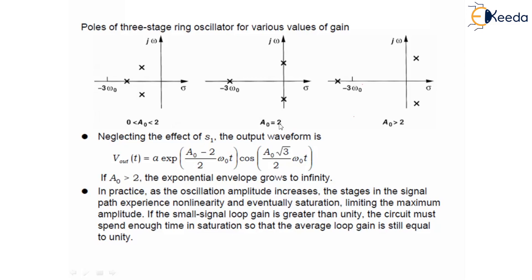For a circuit to oscillate, the open-loop gain per stage must be greater than or equal to 2, as shown by the pole diagram. This is all about the three-stage ring oscillator.